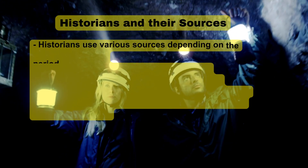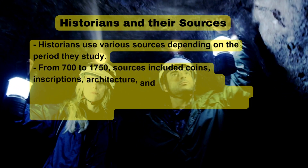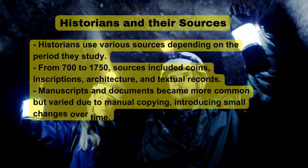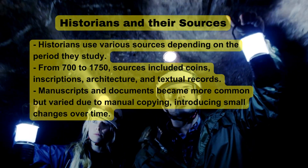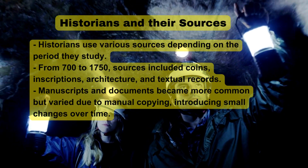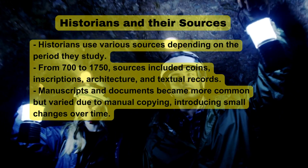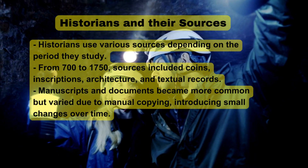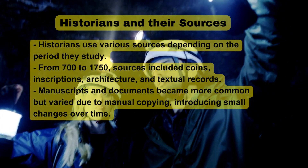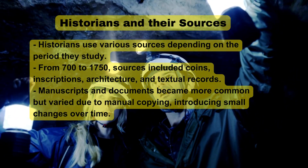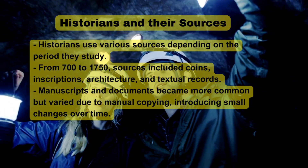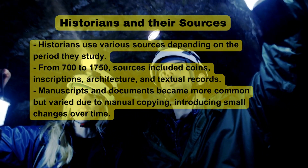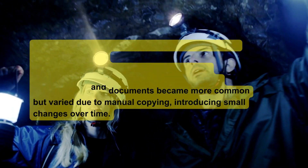Historians and their Sources: Historians use various sources depending on the period they study. From 700 to 1750, sources included coins, inscriptions, architecture, and textual records. Manuscripts and documents became more common but varied due to manual copying, introducing small changes over time.